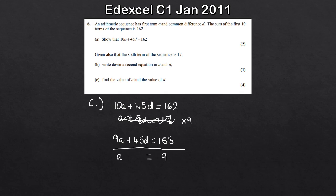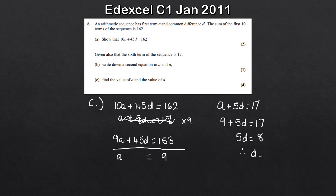Now we just need to find D using substitution. Using A plus 5D equals 70 seems the easiest - substituting A equals 9 gives us 9 plus 5D equals 70. Subtracting 9 from both sides: 5D equals 8, so D equals 8 over 5. That's our values of A and D - 7 marks in total. A pretty standard style question using the summation formula for part A and the nth term formula for part B.